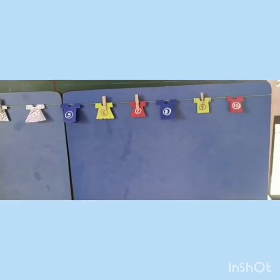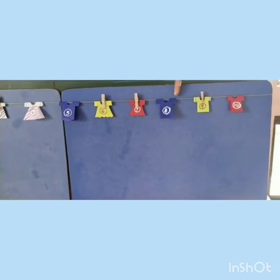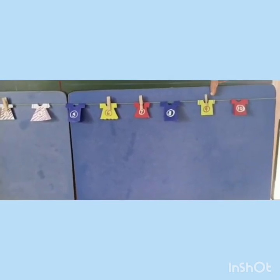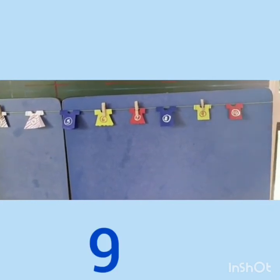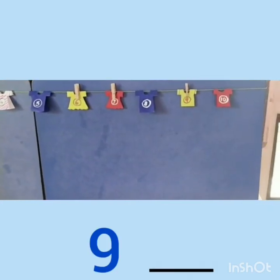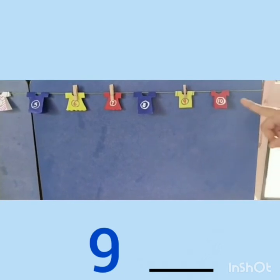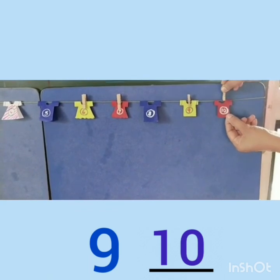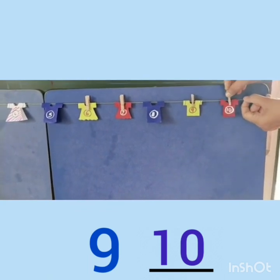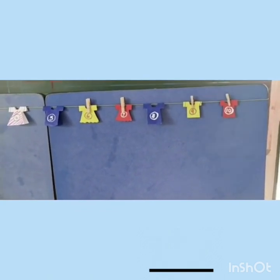Now, children, can you see another bag? Where it is? Yes. Here. It is on the t-shirt where number nine is written. And children, can you tell me after nine, which number comes? Yes. Number ten. So, what we have to do? We have to clip it like this. So, have you enjoyed this?